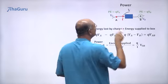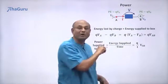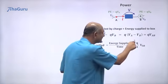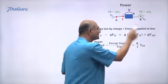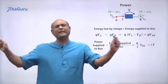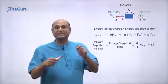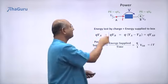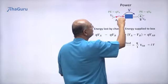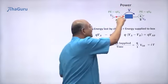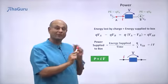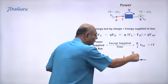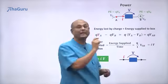VAB is the potential drop between the two ends of the box, from the entry point of the current to the exit point of the current. So I can write Q/T as I (current) and VAB as V. So this formula can be written as I times V. Power supplied to any electrical element P equals I times V, where I is the current going into the box and V is the potential drop from the entry to the exit point.